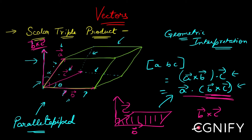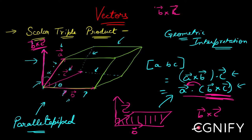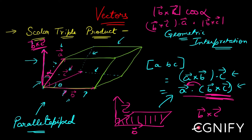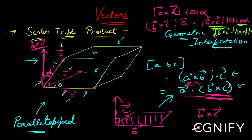Now I'm dotting this b cross c with a. Dotting means I take the magnitude: mod(b cross c) times mod(a) times cos(alpha), where alpha is the angle between a and b cross c. So b cross c dot a equals mod(b cross c) times mod(a) times cos(alpha).